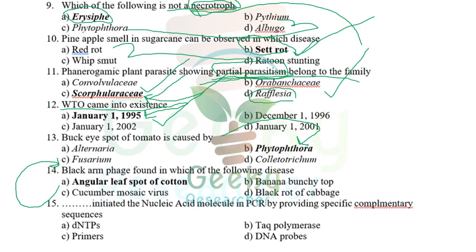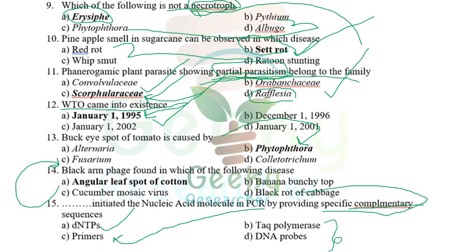The blank that initiates the nucleic acid molecule in PCR by providing the specific complementary sequence — specific complementary sequence is provided by primers. I also have a little doubt it could be dNTPs, but I believe the answer is primers.